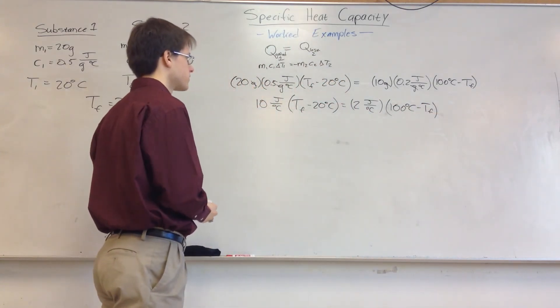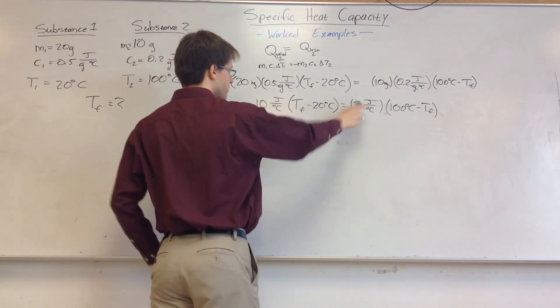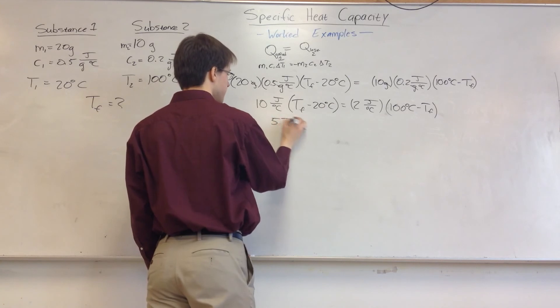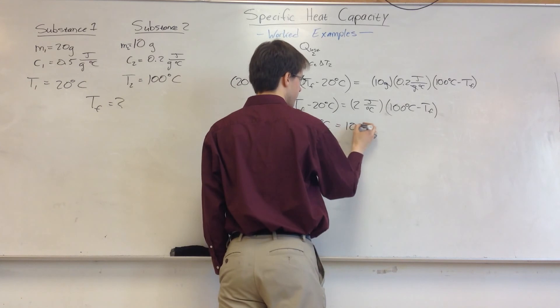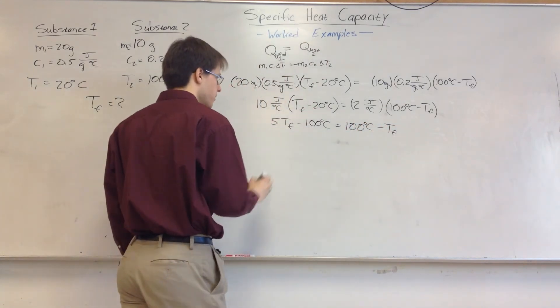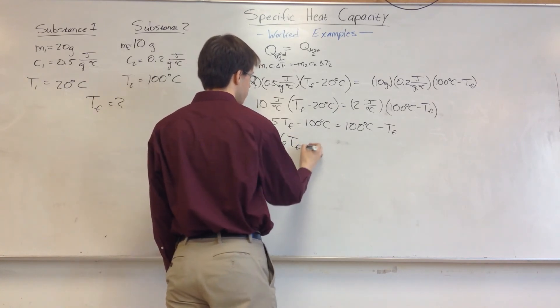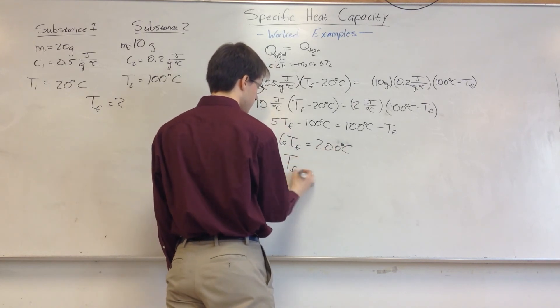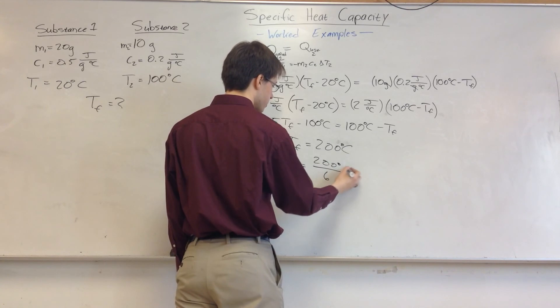So I'm going to divide both sides by 2. So I get 5 over here, unitless, because the dimensions cancel. And then I'm going to distribute that 5. So I get 5 TF minus 100 degrees Celsius is equal to 100 degrees Celsius minus TF. So I'll add TF to both sides. So I get 6 TF. And I'll also add 100 to both sides. So I'm going to get 200 degrees Celsius. So I'm going to have TF is equal to 200 over 6 degrees Celsius.